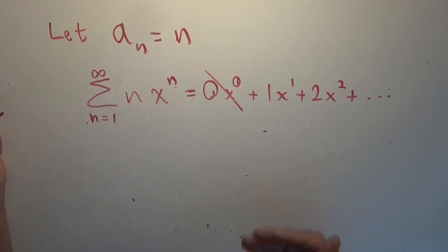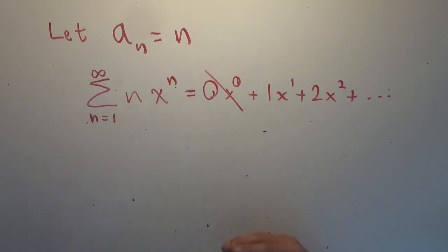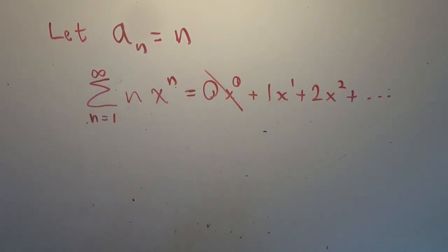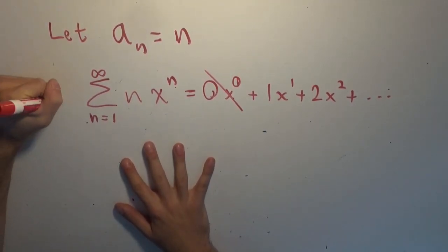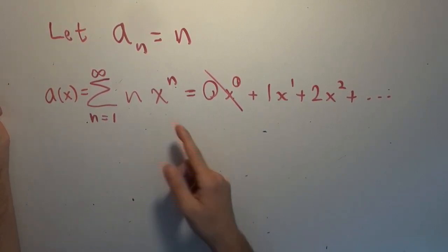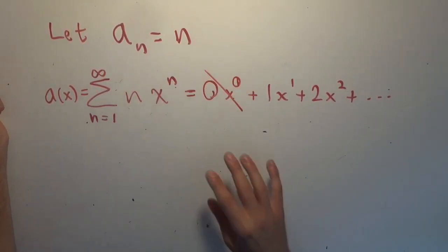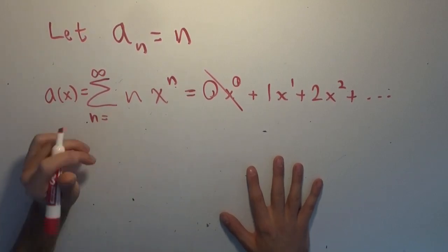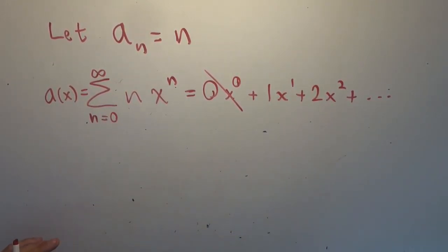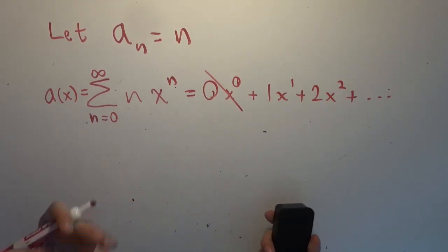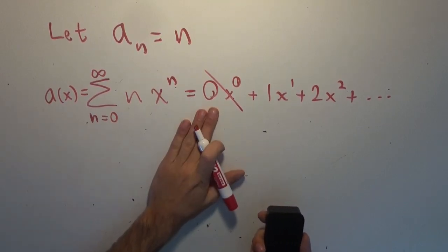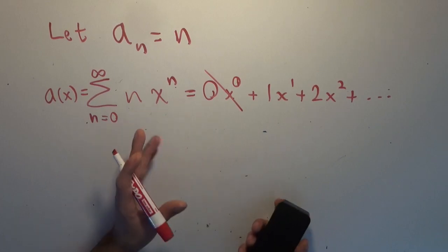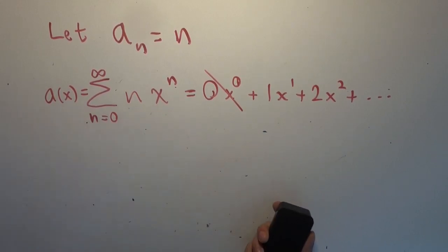We want to manipulate this into other similar forms so we can extract what the original function has to be. We call this A of x — the function described by this sequence. We'll keep the sum starting at zero since the first term is zero times x to the zero, which is zero, so it's perfectly valid. Now we're going to be clever and investigate what x times A of x is.